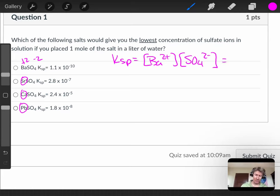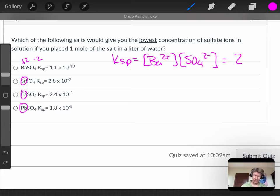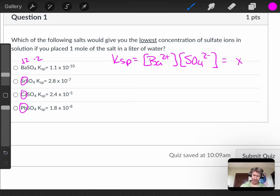And so when you end up plugging this into a KSP ice table, it's going to be, sorry again, X squared is the expression that's equal to the KSP value.